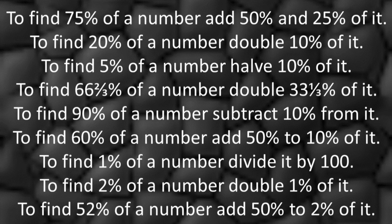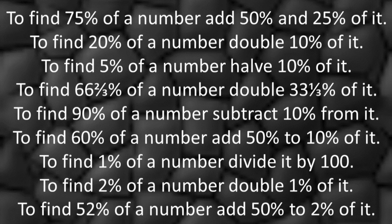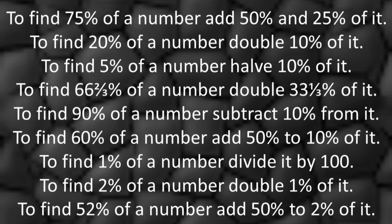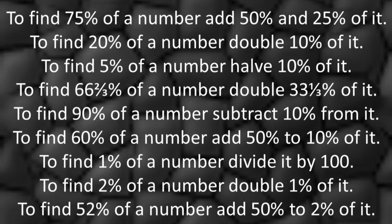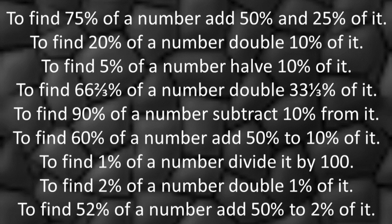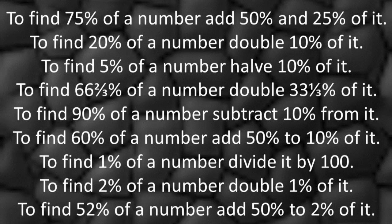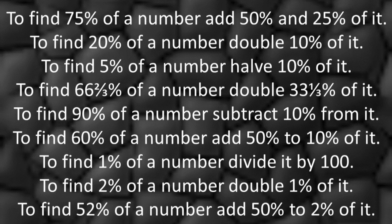To find 90% of a number subtract 10% from it. To find 60% of a number just add 50% and 10% together. To find 1% of a number you divide it by a hundred, because 1% means 100th of the number. Then to find 2% of a number you double the 1%. And to find 52% of a number you add the 50 and the 2% of it. Now you don't need to remember all of these tricks. You just make them up on the spur of the moment in order to solve the problems that you need to do.